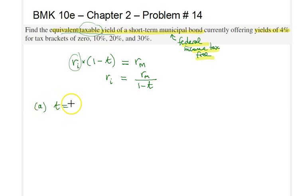In the first case, the tax bracket is equal to zero. In this occasion, r_I, an equivalent taxable yield, or basically a security which will give you an equal return after tax, has a return of the 4% of the municipal bond divided by 1 minus zero, but that's simply 4%.